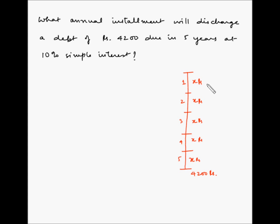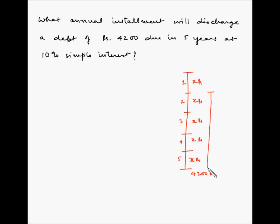When you pay the installment annually, you are avoiding the interest on that installment for the remaining years. Alternatively, the bank can deposit that installment and gain 10% simple interest for the remaining years. For example, when you pay an installment of X rupees at the end of the first year, you are avoiding the interest on X rupees for the remainder of four years.